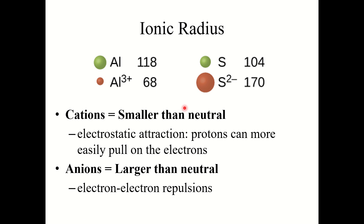To summarize: cations are smaller than the neutral atom because of increased electrostatic attraction — protons can more easily pull on fewer electrons, shrinking the radius. Anions are larger than the neutral atom because of increased electron-electron repulsions — electrons get further from one another, causing the radius to increase.